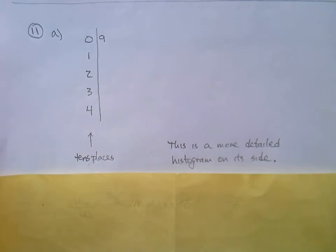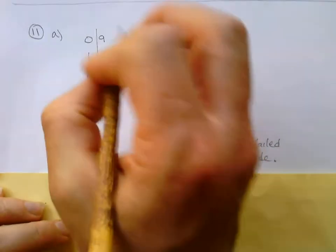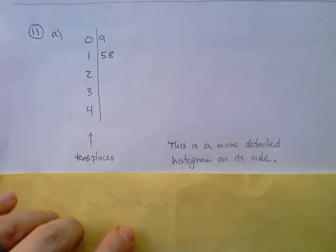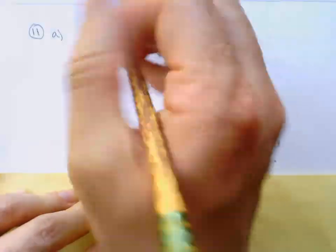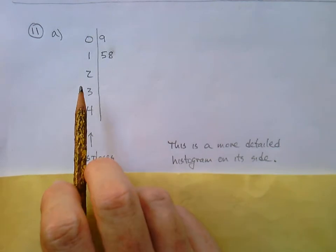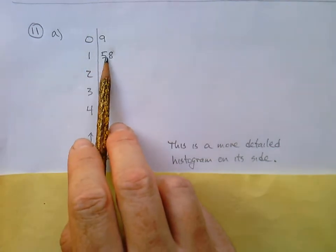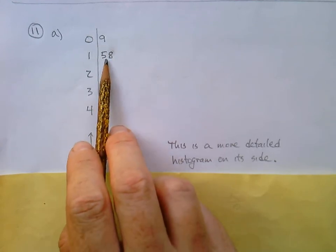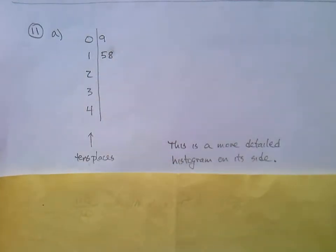the only data value there with 0 as the tens place is the 9, right? So we're going to put 0, 9. Somebody scored a 9 on this test. And then next, we've got 2 with a 1 as their tens place, right? 15 and 18. So we're going to put a 5 and an 8. And the 8 goes right next to the 5. It looks like 58. But because we know we're looking at a stem plot, they would know someone scored 15 and someone else scored 18 because these are ones places. That's the tens place. Then moving on. I think if that makes sense to you, we pretty much got it, but we'll finish.